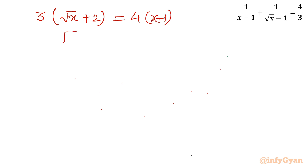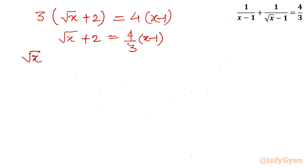In other words I can write: root x plus 2 equals (4 over 3) times (x minus 1). Dividing both sides by 3, then taking away 2 from both sides, the equation becomes: root x equals (4 over 3)(x minus 1) minus 2.